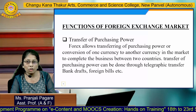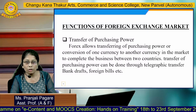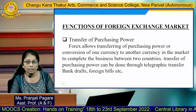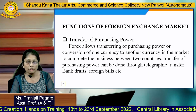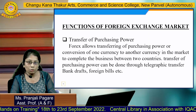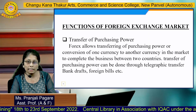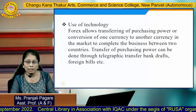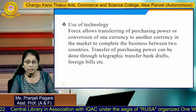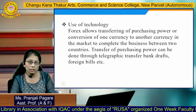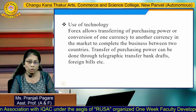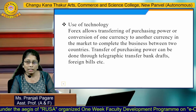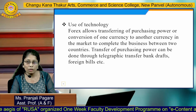Next we will learn the functions of the foreign exchange market. The first function is transfer of purchasing power. Forex allows transferring of purchasing power, or conversion of one currency to another currency in the market, to complete business between two countries. Transfer of purchasing power can be done through telegraphic transfer, bank drafts, foreign bills, etc.